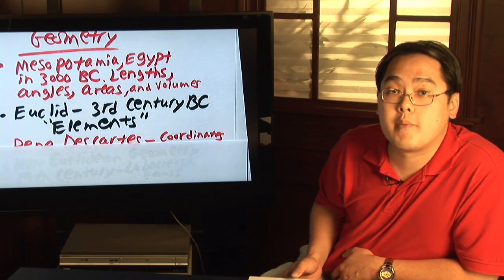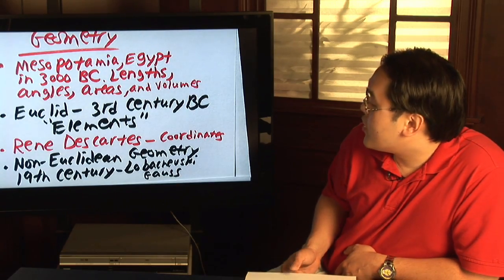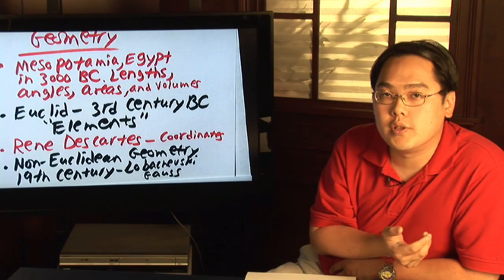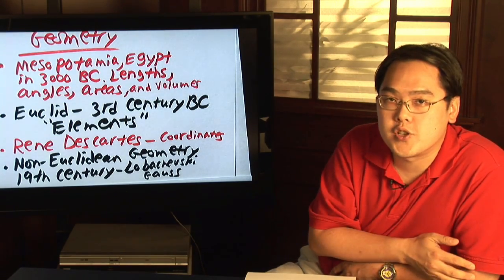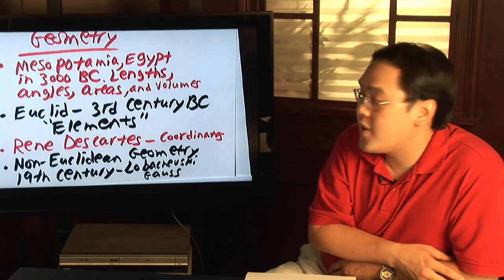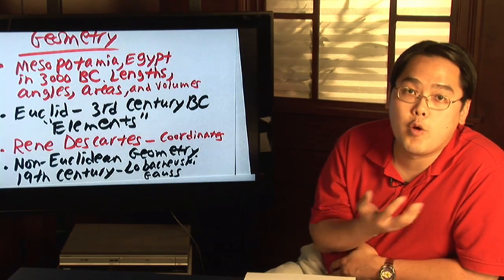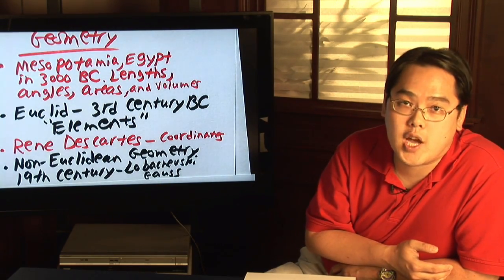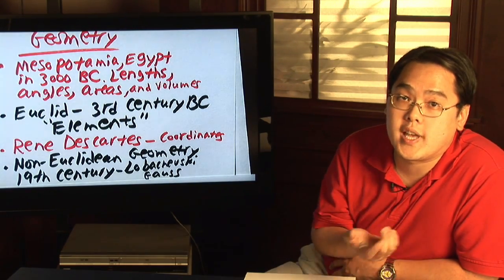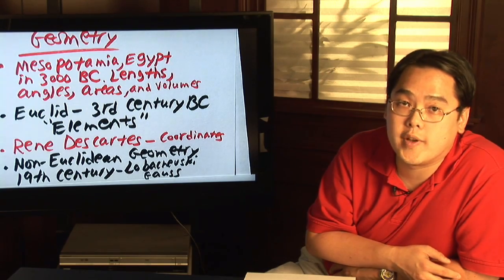But there's another branch of geometry that's out there, non-Euclidean geometry, which replaces Euclid's fifth postulate with other statements. And mathematicians such as Lobachevsky and Frederick Gauss helped pave the way for non-Euclidean geometry in the 19th century. So as recently as a couple of hundred years ago, we have geometry still evolving.